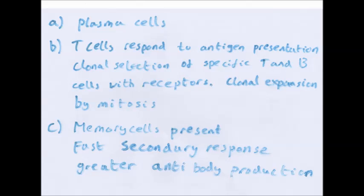B. T lymphocytes respond to the antigen presentation. Clonal selection of specific T and B cells with receptors or antibodies. And clonal expansion by mitosis. This all takes time before the antibodies, because remember, it's not until the clonal expansion that the plasma cells which emit antibodies appear. Explain why the person is unlikely to get the symptoms of the disease again: because there are memory cells present. And the secondary response is fast and also provides greater antibody production at a quicker rate. And that's it.